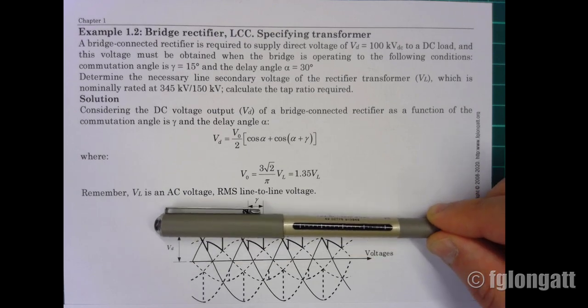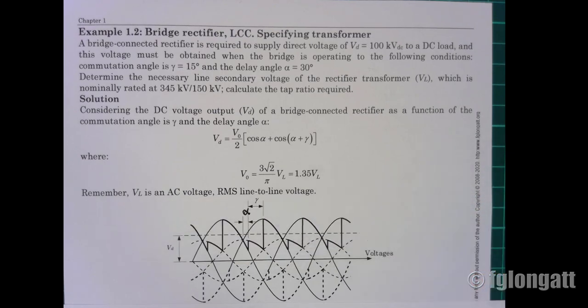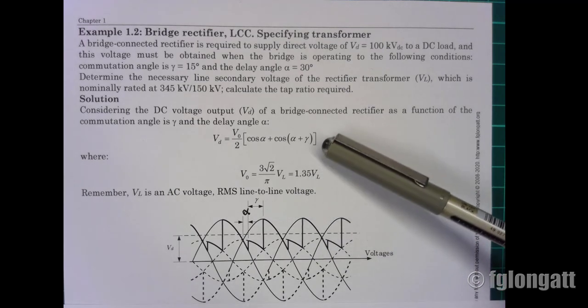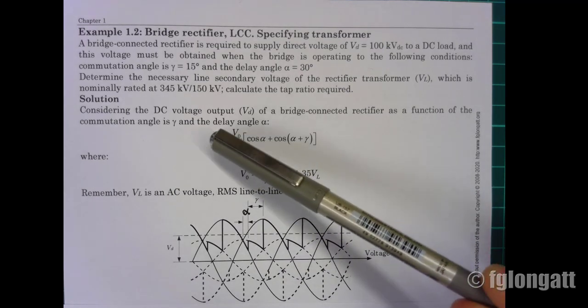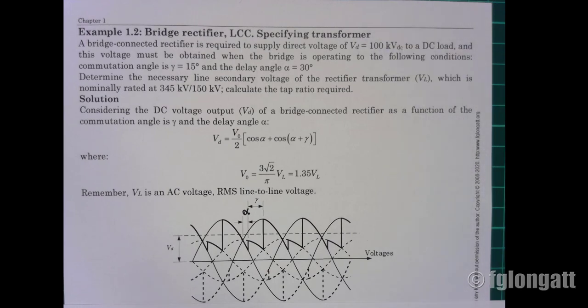But there is a relationship that is already defined between the DC voltage that we need, 100 kV, and VL, which is the voltage that we want to know in this case.